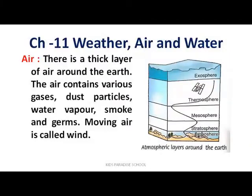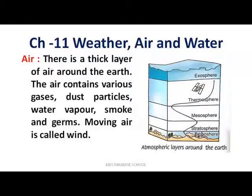Slide की photo में atmospheric layer around the earth दिखाई हुई है। Air की अलग-अलग layers हैं। जैसे जैसे आप ऊपर जाते हो, air का amount कम होता जाता है। As we go higher from the earth, the layer of the air becomes thinner. इस हिसाब से ही हमने इसको classify किया हुआ है — in the atmospheric layers, which are troposphere, stratosphere, mesosphere, thermosphere and exosphere.